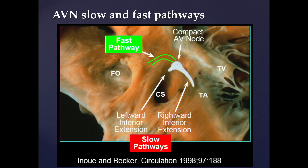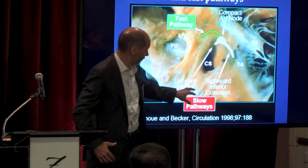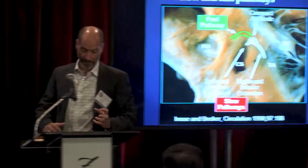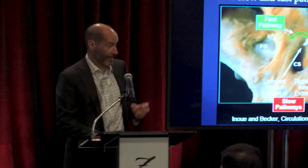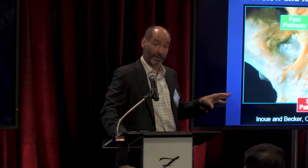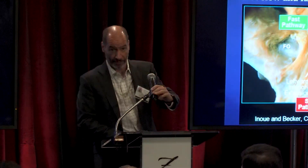The fast pathway is right on top of the compact AV node, and the slow pathway consists of extensions of the perinodal tissue around the coronary sinus ostium — a connection of the right atrial tissue with the AV node that becomes the slow pathway. In normal sinus beats, keep in mind this is normal anatomy. We all have this; it is nothing anomalous.